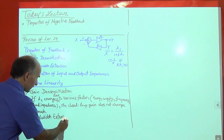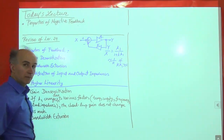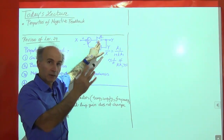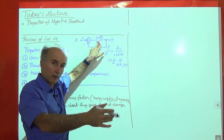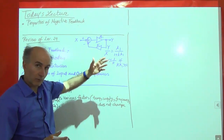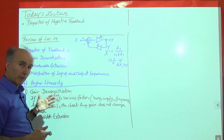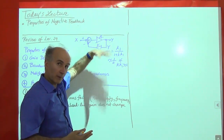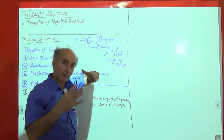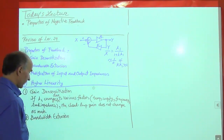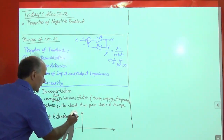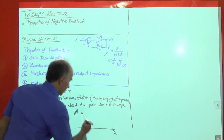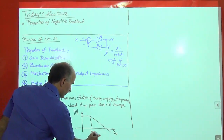Let's move on to bandwidth extension and see how that happens. Intuitively, if the frequency of operation affects the gain of A1 — say the gain is 100 at 100 MHz but only 200 at 500 MHz — one of the factors affecting the gain is frequency. When we apply feedback around this amplifier, we expect the overall transfer function to have less dependence on A1, so even if A1 drops with frequency, this overall system should not have much change in gain. So this is the open-loop frequency response: it goes flat, then drops at some pole frequency.